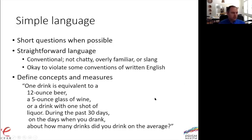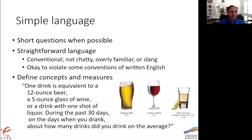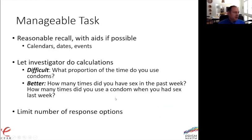Simple language and shorter questions are better. Try to be straightforward, not chatty or overly familiar, and define concepts and measures. For example: 'One drink is equivalent to a 12-ounce beer, a five-ounce glass of wine, or a drink with one shot of liquor. During the last 30 days, on days when you drank, how many drinks did you have on average?' This is cognitively burdensome, but in the NHBS questionnaire, they accompany that question with a picture, which really helps define those concepts and makes the question more relatable.